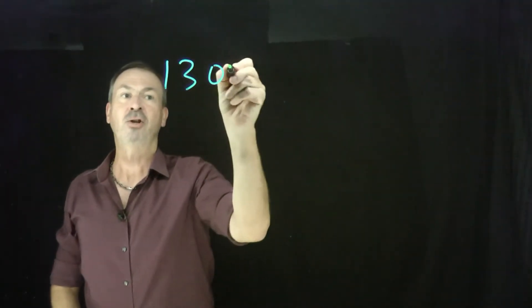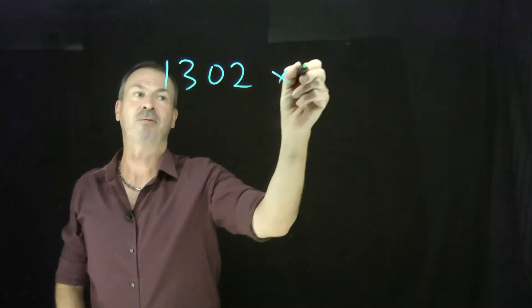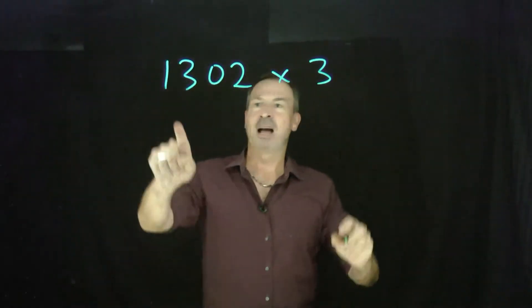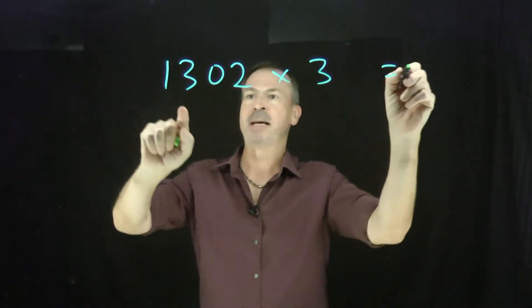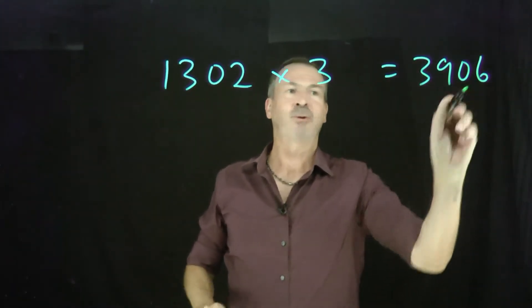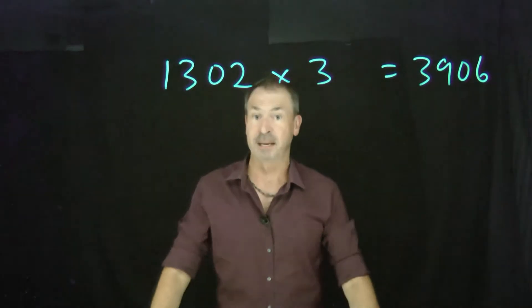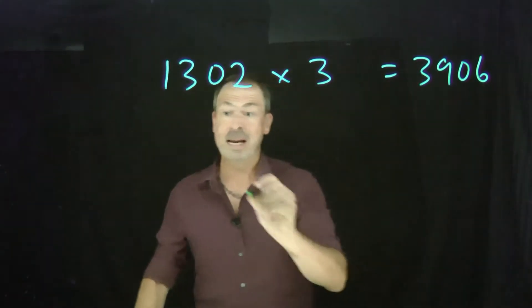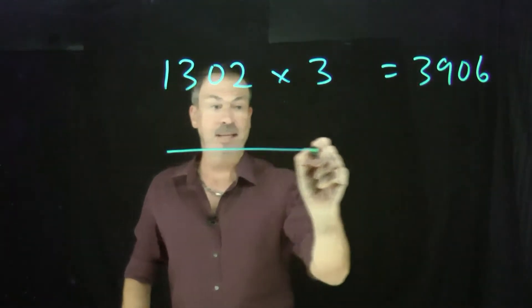Let's do a more complicated example. Let's do 1302 times 3 this time. The answer is going to be 3906. But let me draw a picture of this to see what's really going on.